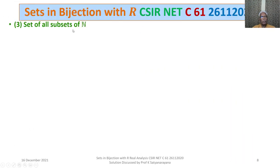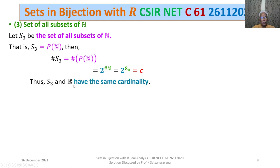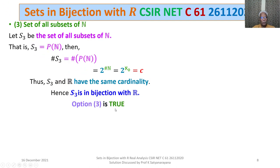Option 3: the set of all subsets of N. Let S3 be this set. Therefore S3 is the power set of N, so |S3| = |P(N)| = 2^|N| = 2^ℵ₀ = C. Thus S3 and R have the same cardinality. Hence S3 is in bijection with R, and Option 3 is true.